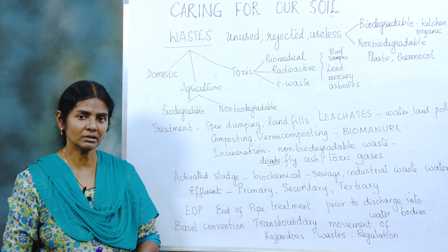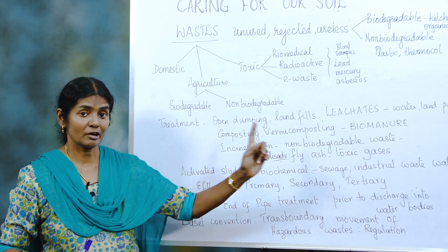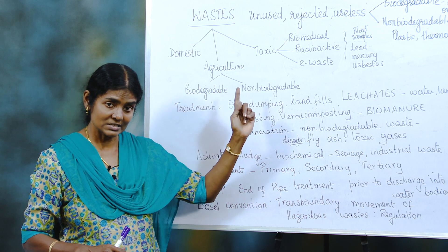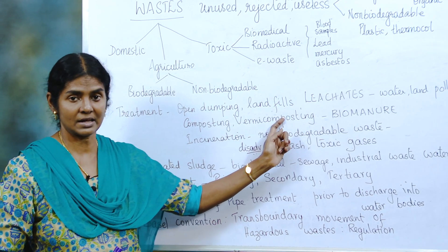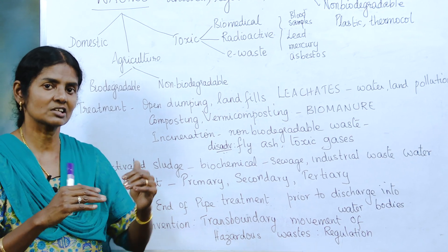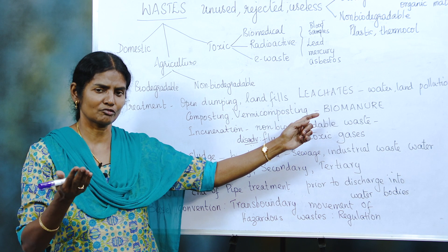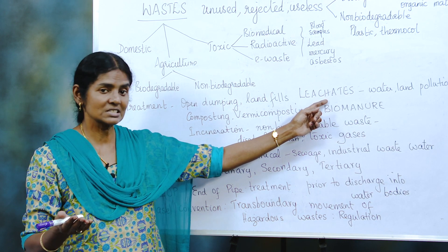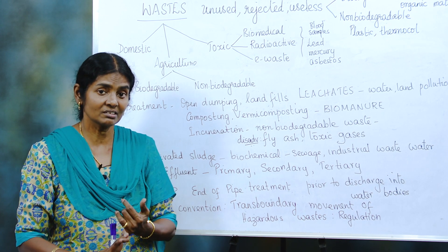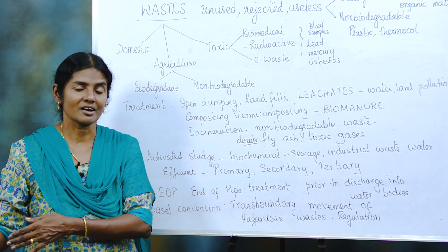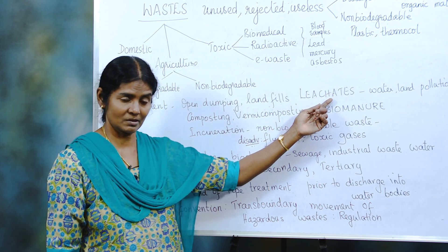Landfills are better than open dumping because every time they fill in the garbage, there is a layer of soil, and then they fill in more garbage. But the worst part of landfills is that, especially during the rainy season or when it is very damp, there is a leakage of liquid fluid — called leachate. It is very important. It slowly seeps down into the earth, contaminating it. If there is a slope, it goes to the water bodies, contaminating water and affecting biodiversity — it is a chain reaction.